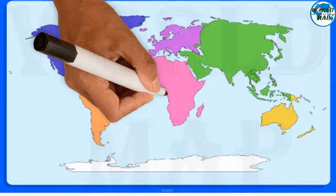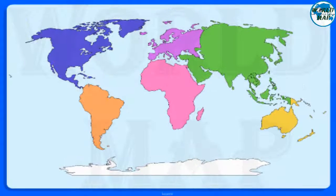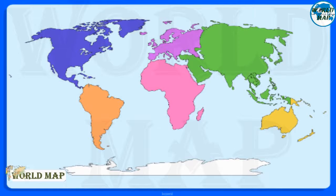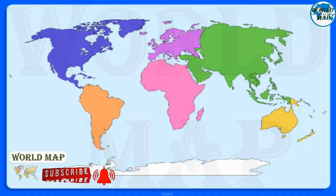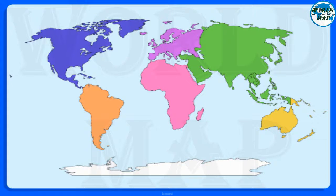A continent is one of Earth's seven main divisions of land. The continents are, from largest to smallest: Asia, Africa, North America, South America, Antarctica, Europe, and Australia.